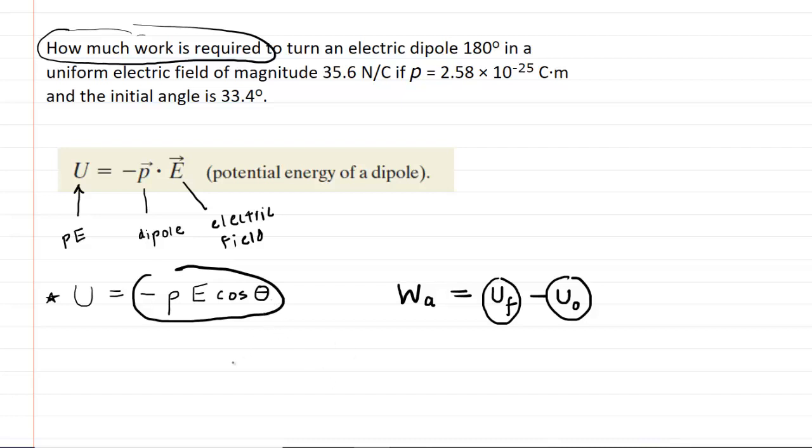So it's going to look like the following. We have the work done by some external agent equals negative P times E times the cosine of the final angle, minus, and then we'll put a parenthesis here, because the expression itself includes a negative sign. So we would have negative P E and then the cosine of the initial angle.